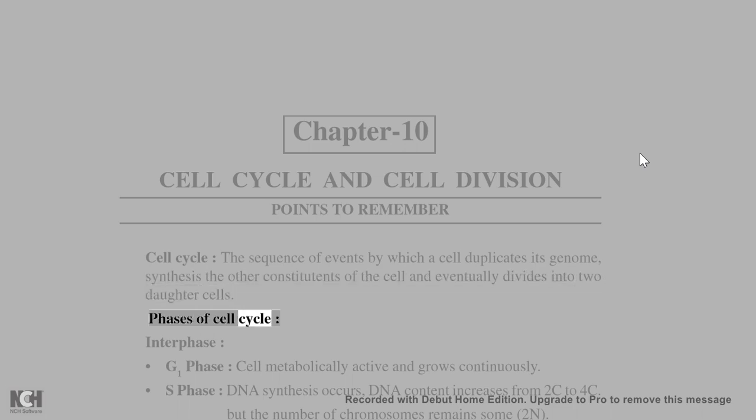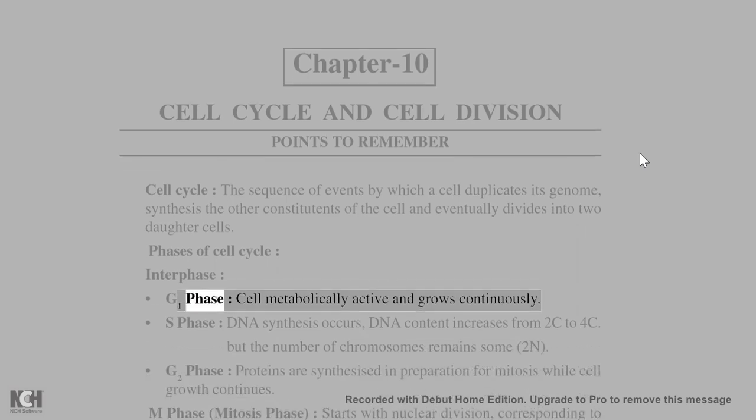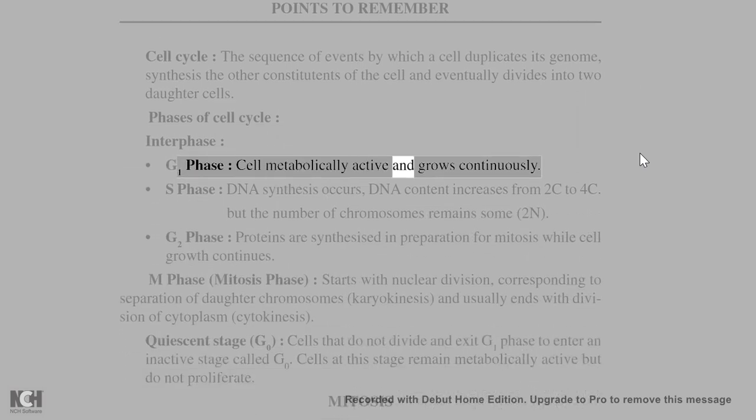Phases of cell cycle: Interphase. G1 phase - cell is metabolically active and grows continuously. S phase - DNA synthesis occurs.